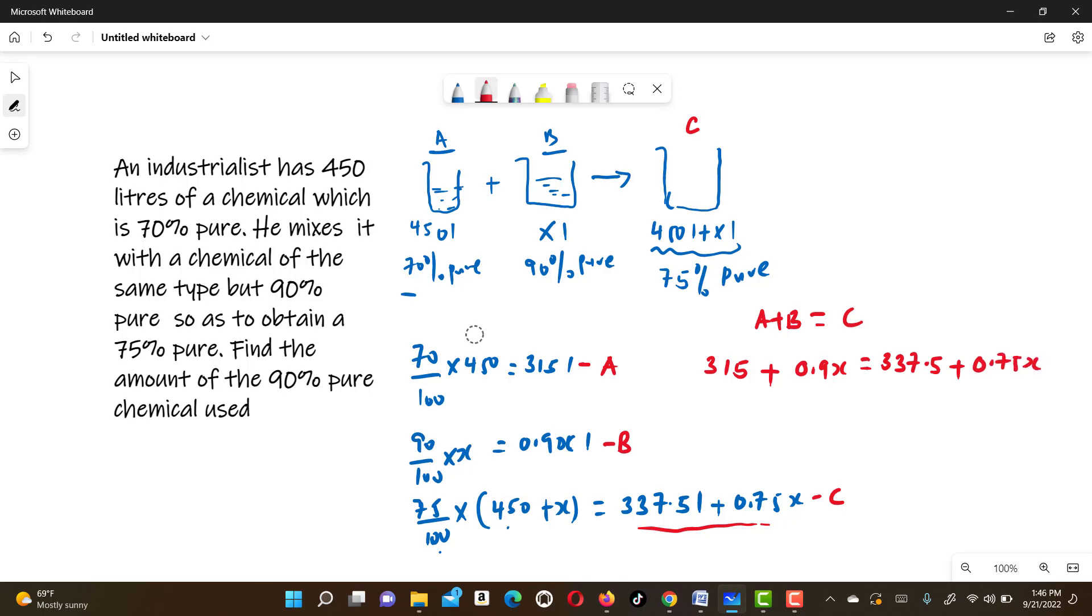Collecting the like terms, we are going to take this to the other side. So we have 0.9X minus 0.75X is equivalent to 337.5 minus 315.